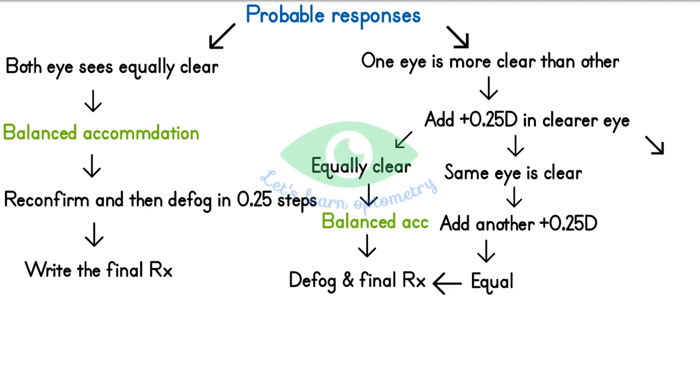But if the patient still says left eye is clearer, it is time to check for 2 things. Whether the monocular refraction was done correctly or did the patient fully understand the test procedure. Because more than 0.25 diopter of accommodation balance happens during incorrect refraction only and may not be due to unbalanced accommodation.